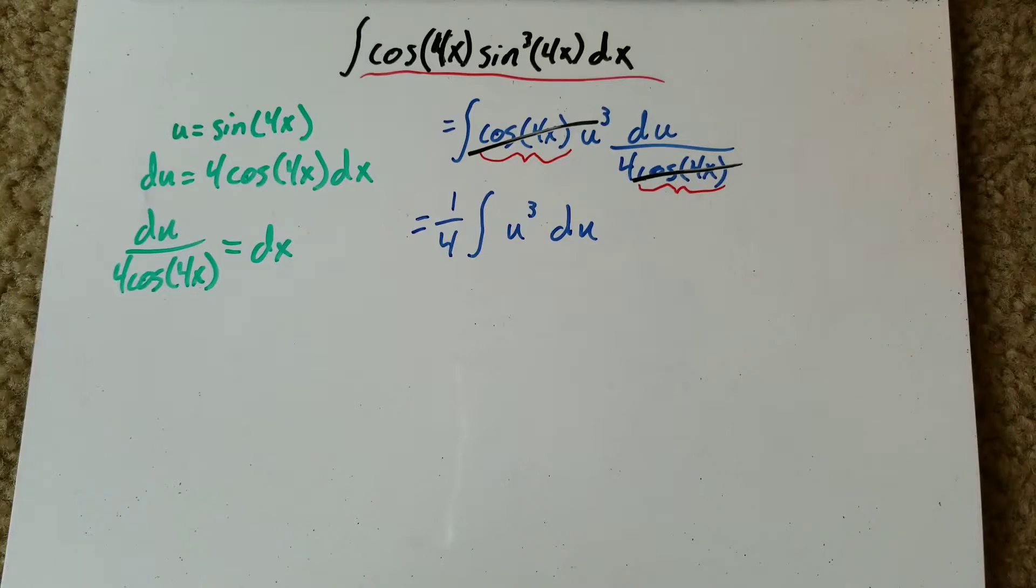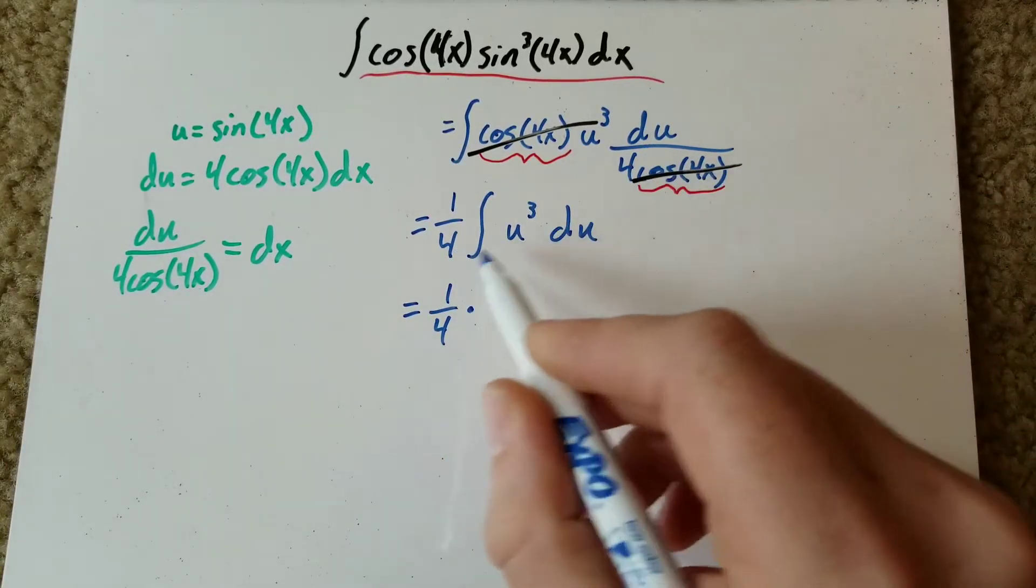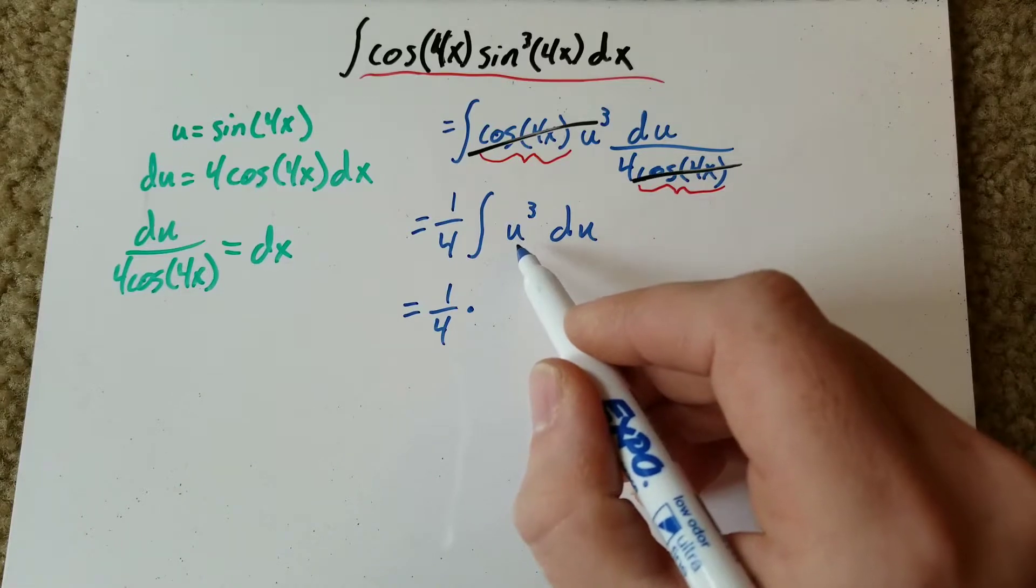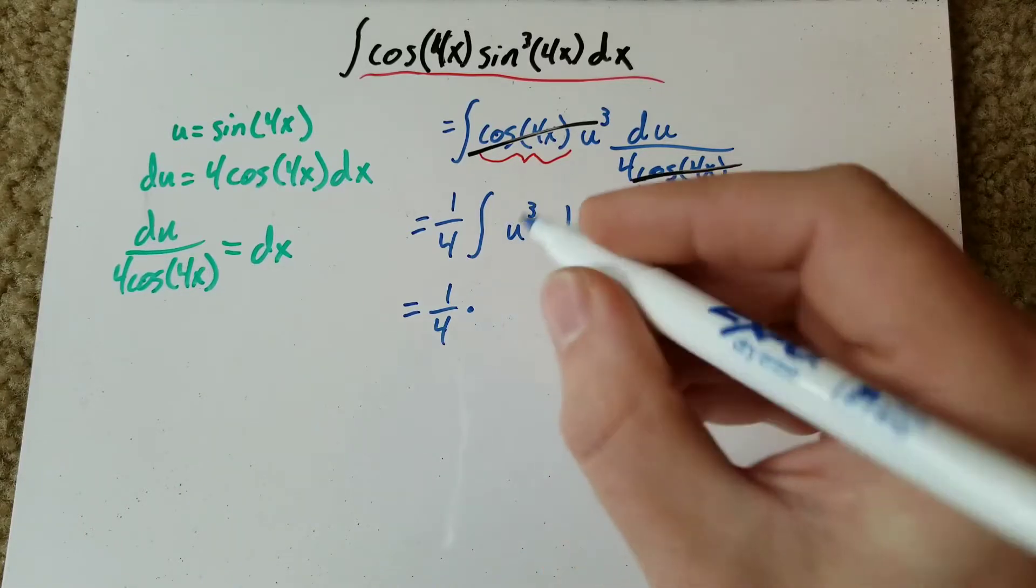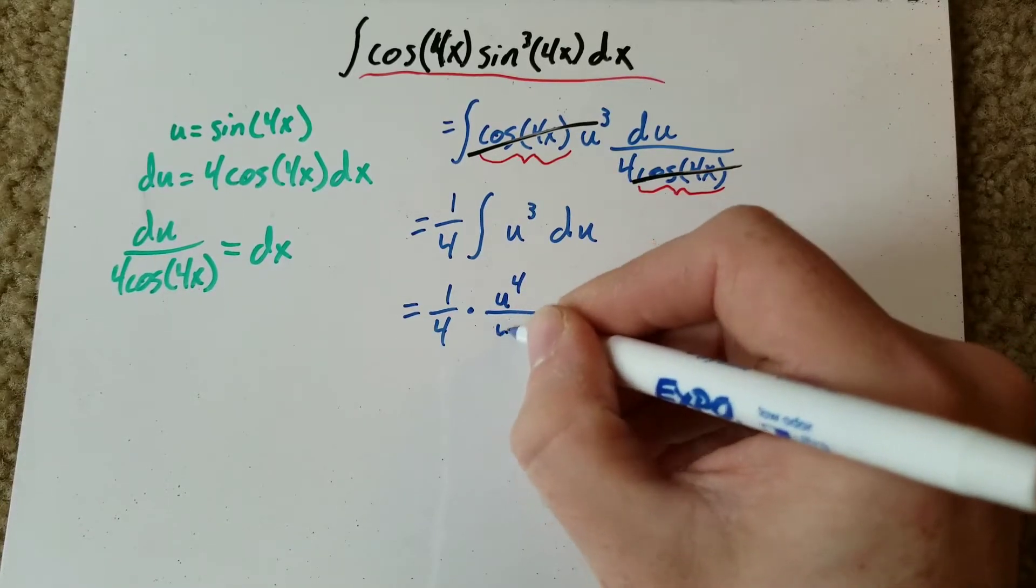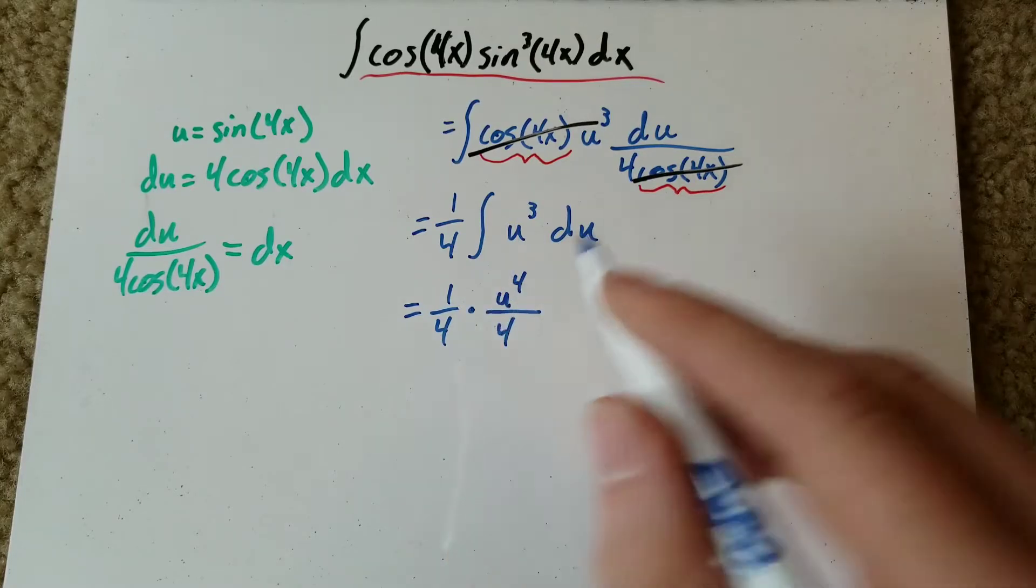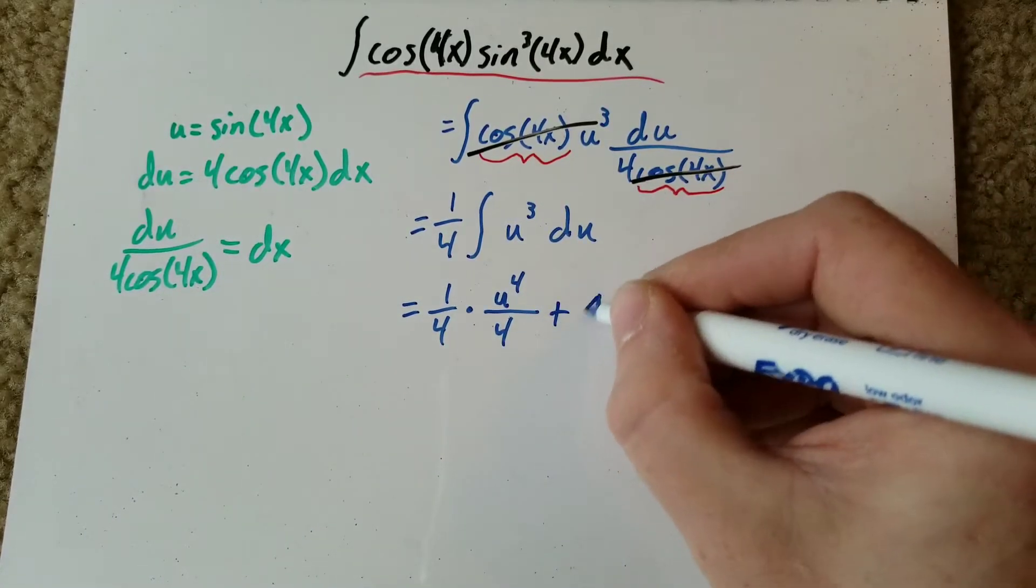Now from here is relatively easy, because all we've got to do is take the integral of u cubed. So that gives us 1 over 4 times, well the integral of u to the 3rd, that becomes u to the 4th and over 4. And at this point, since we're doing an indefinite integral, I'm going to add my plus C right now.